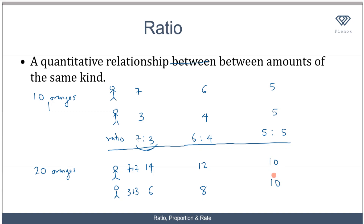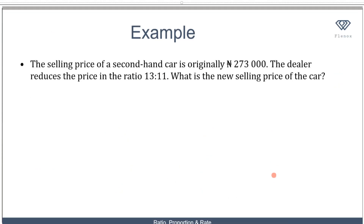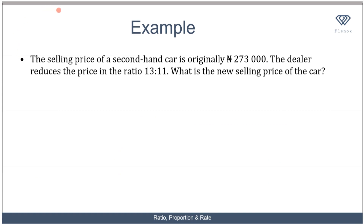So let's see how this is coming to play with one example. The selling price of a second-hand car is originally 273,000 Naira. The dealer reduces the price in the ratio 13 ratio 11. What is the new selling price of the car? So that means the original price was in ratio 13, and now it's being reduced to 11.